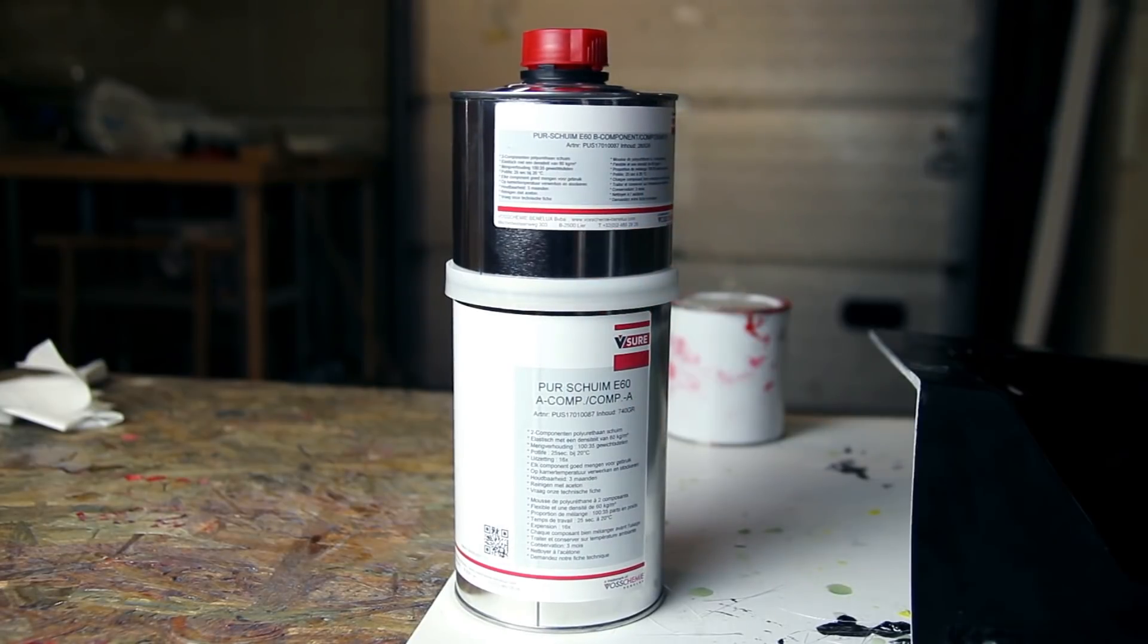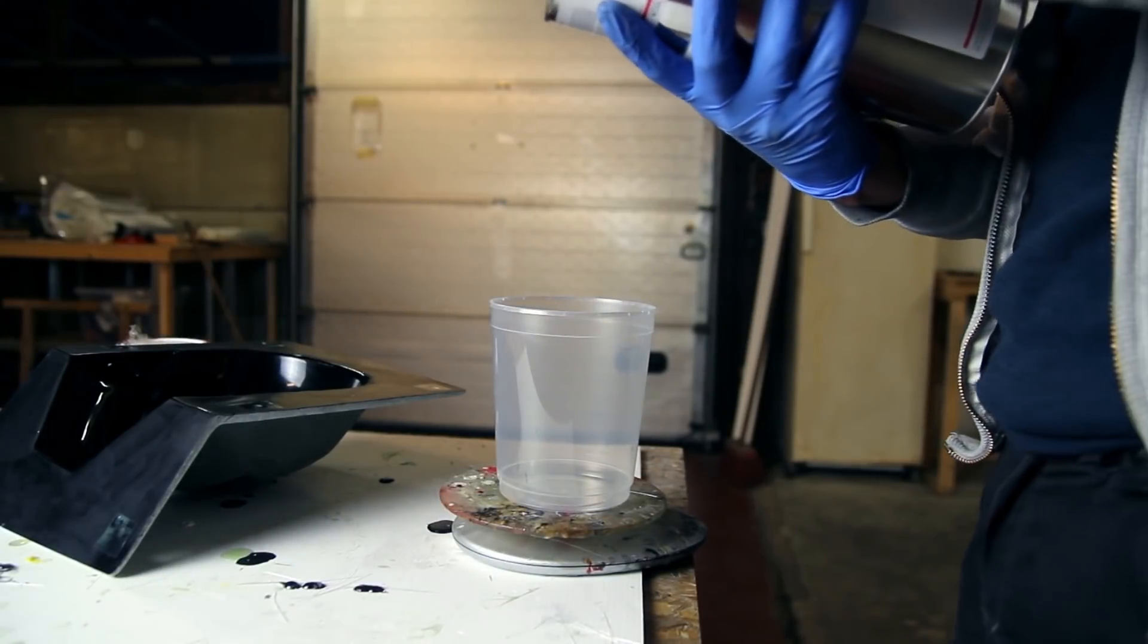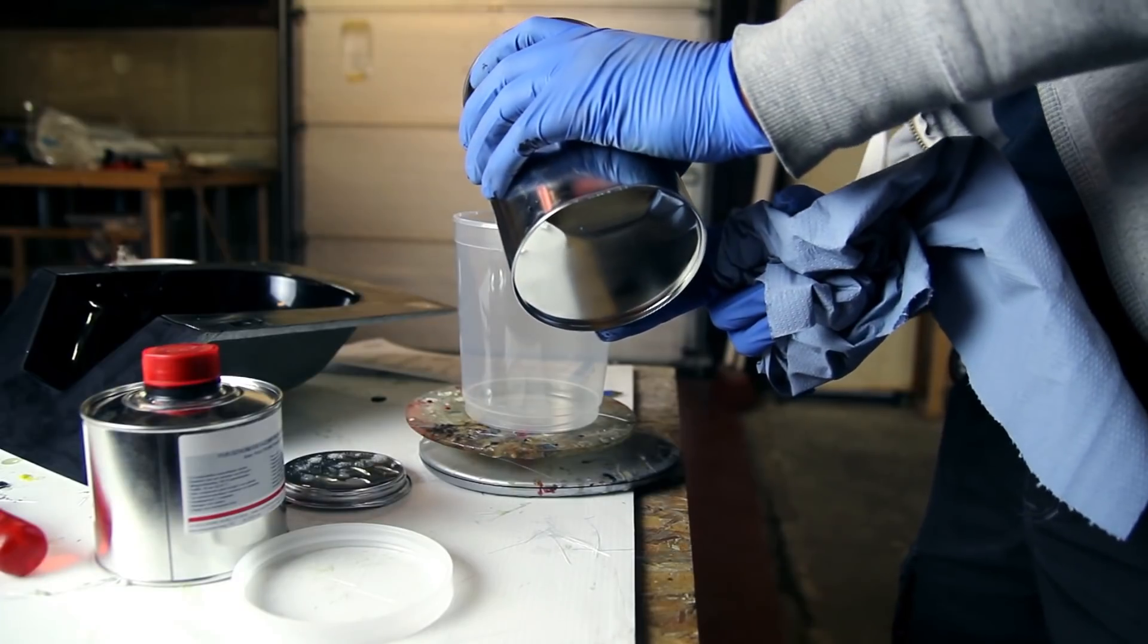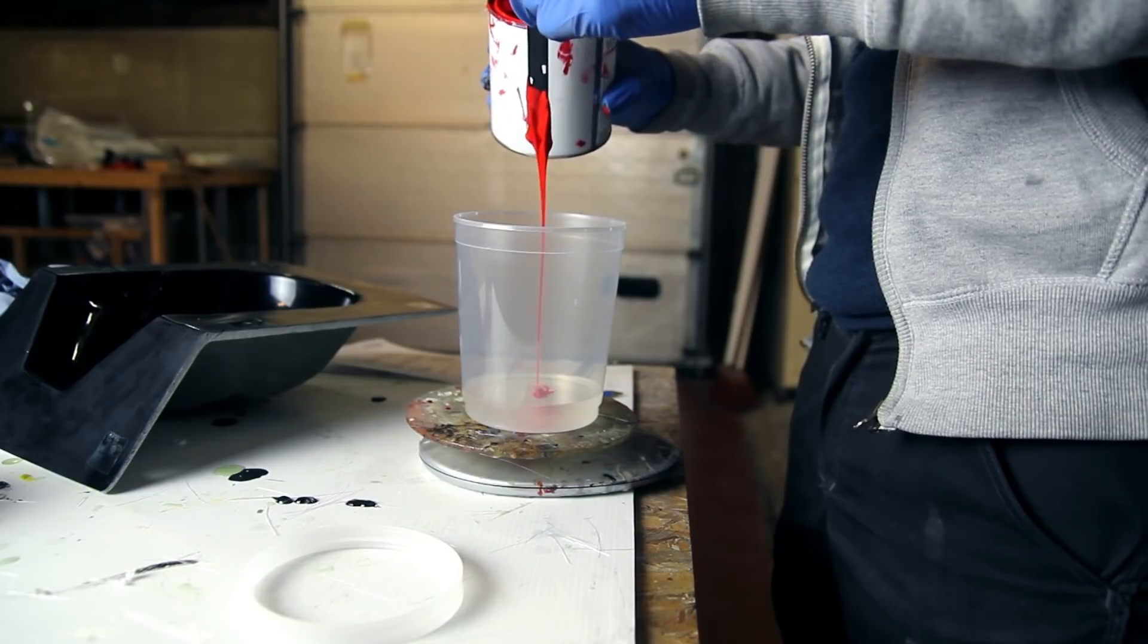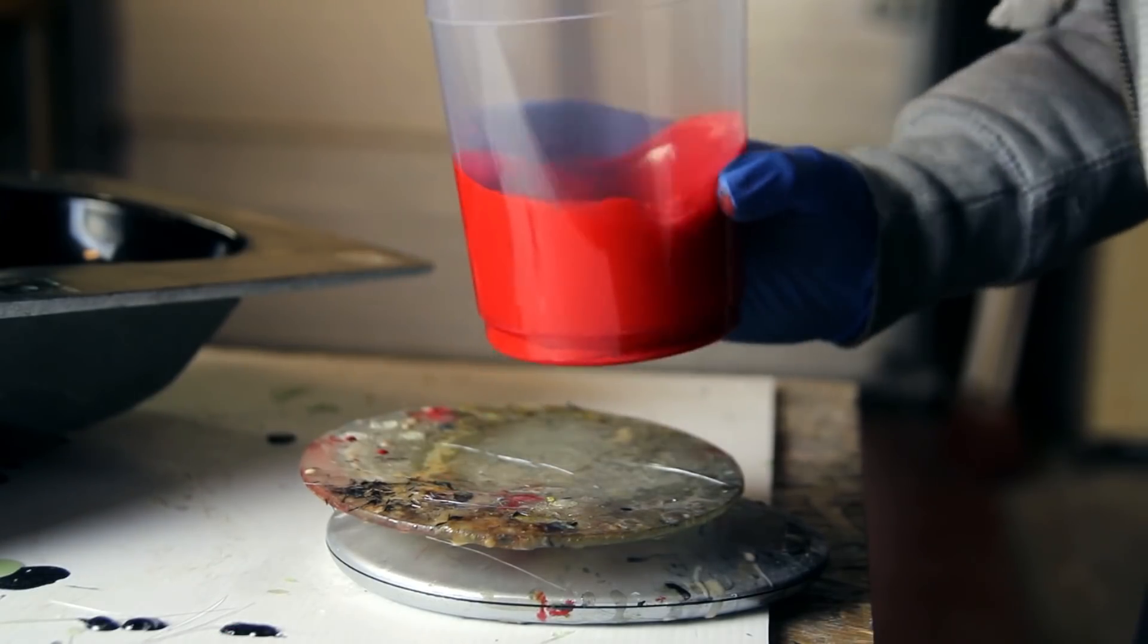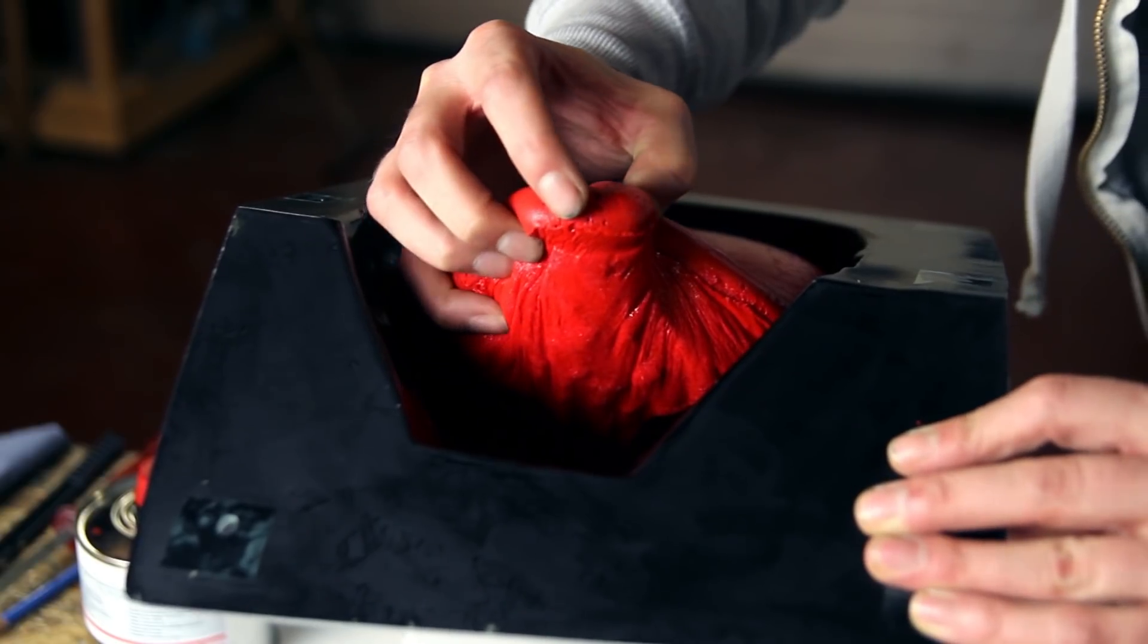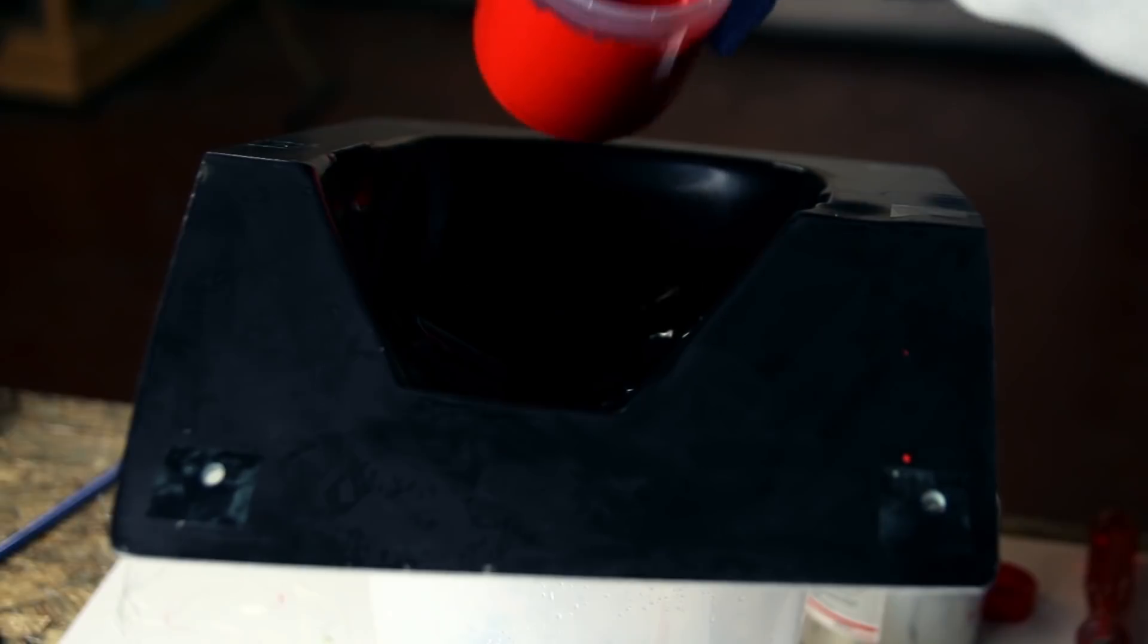I've got the polyurethane E60 foam. I used it previously in a tutorial that was quite popular, so I decided to make a better video now to explain how everything goes, because the first video was shot around six years ago and the quality was very bad—this should be a big improvement. You don't need a lot because it will expand quite a bit. I'm using the A component—it's called V-Short—and the brand is from Voschemy Benelux, which you can probably order online. I'll add it in the description below.